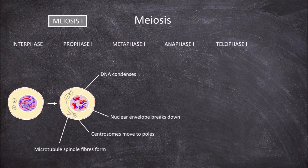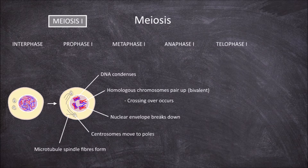Also in this phase, the chromosomes cluster and the homologous chromosomes pair up. The term used for a pair of homologous chromosomes is a bivalent. This is when crossing over occurs, where genetic material is exchanged between non-sister chromatids of these homologous pairs. Crossing over is important as it creates genetic diversity.